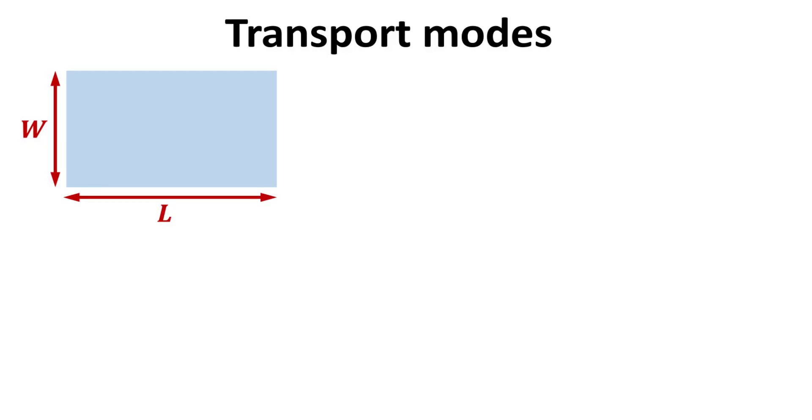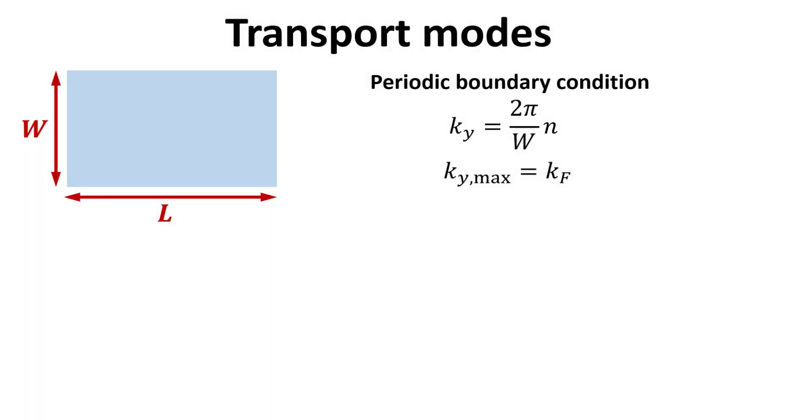Let's consider a graphene sheet of dimension w by l, where l denotes the length of graphene where electrical current flows, and w is the width which is transverse to the current flow. Along the width, it is customary to assume that it is sufficiently wide and impose the periodic boundary condition.